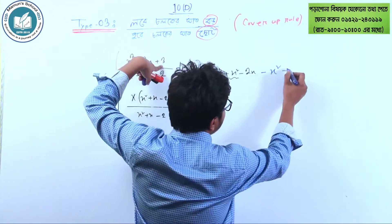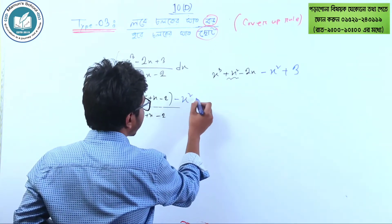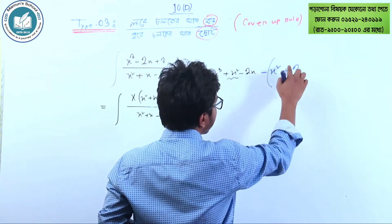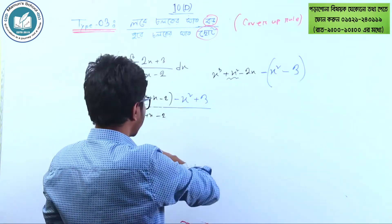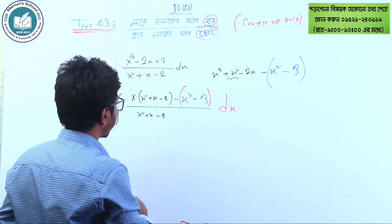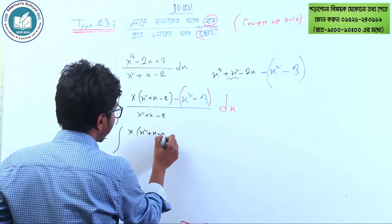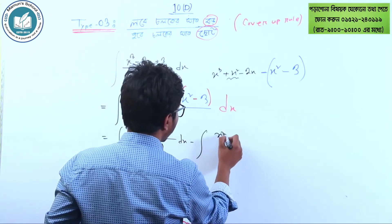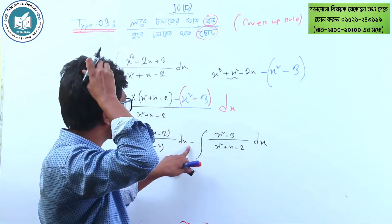So we have minus 2x plus 3. What do we have to do? Minus xc squared minus 2x plus 3. Now let's think — we have a minus, but we have to write xc squared minus 3, so we will cast it as minus minus and cast it into dx. Then: integration of x into (xc squared plus x minus 2) divided by (xc squared plus x minus 2) dx, plus xc squared minus 3 divided by (xc squared plus x minus 2) dx.